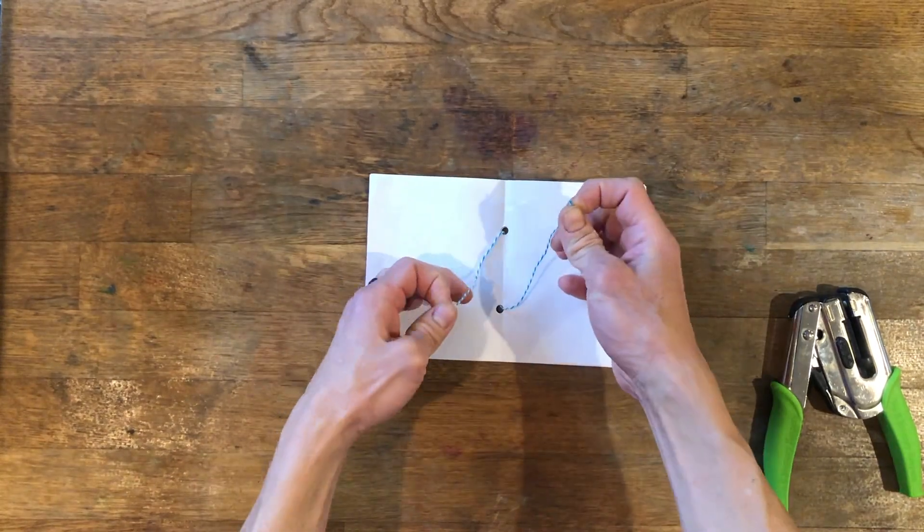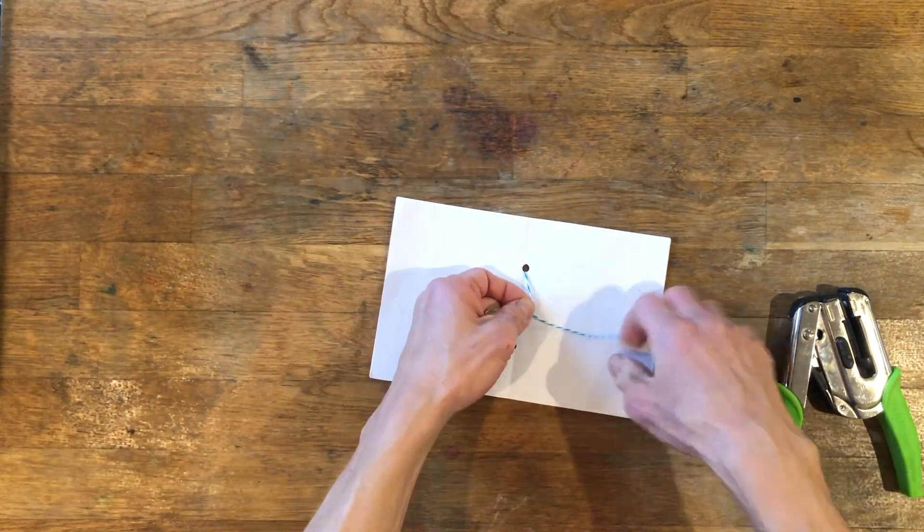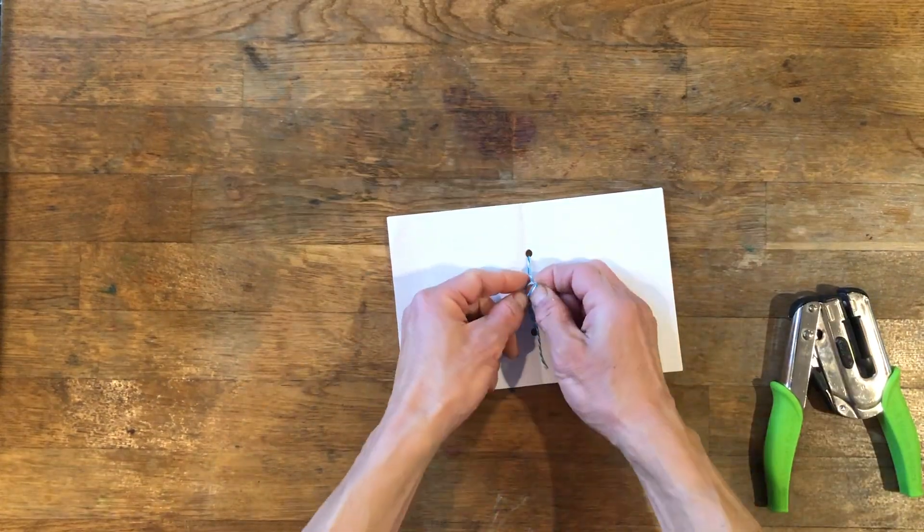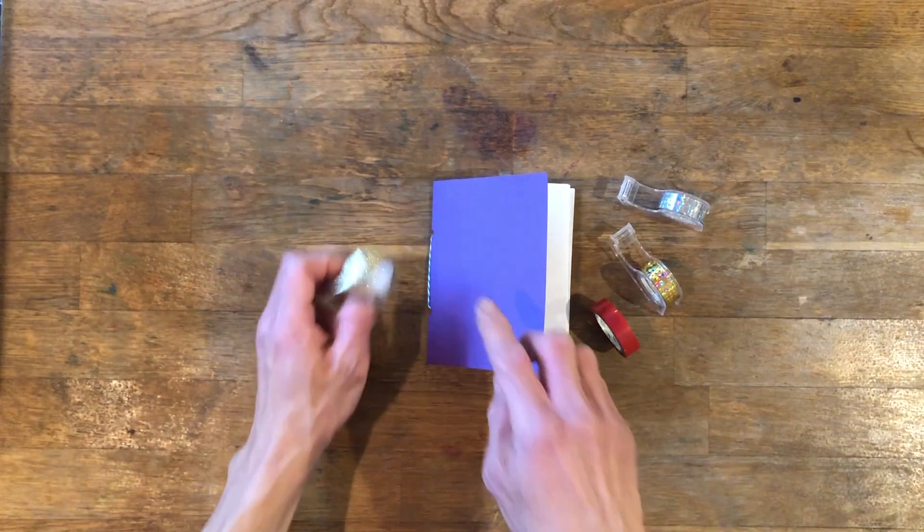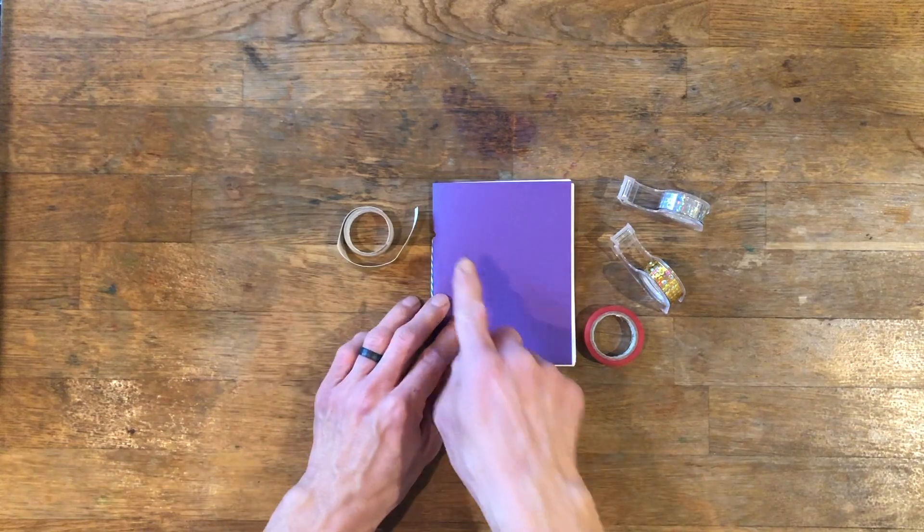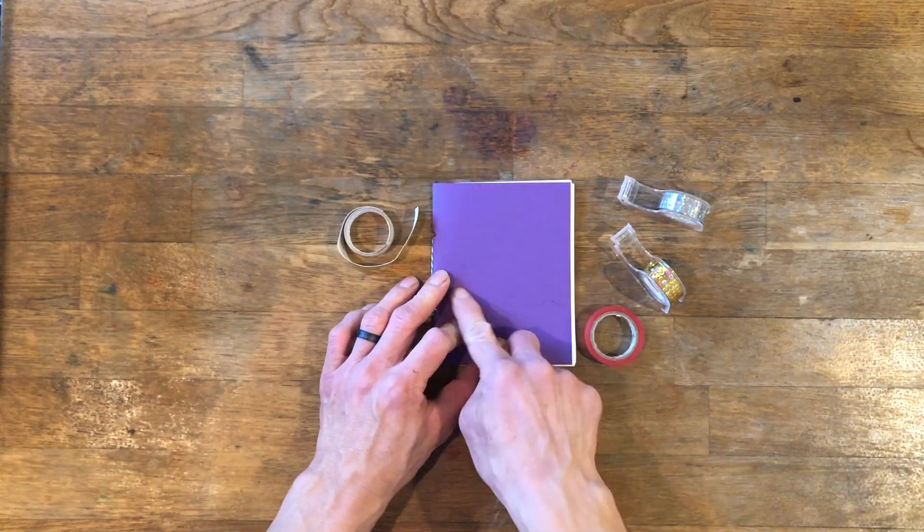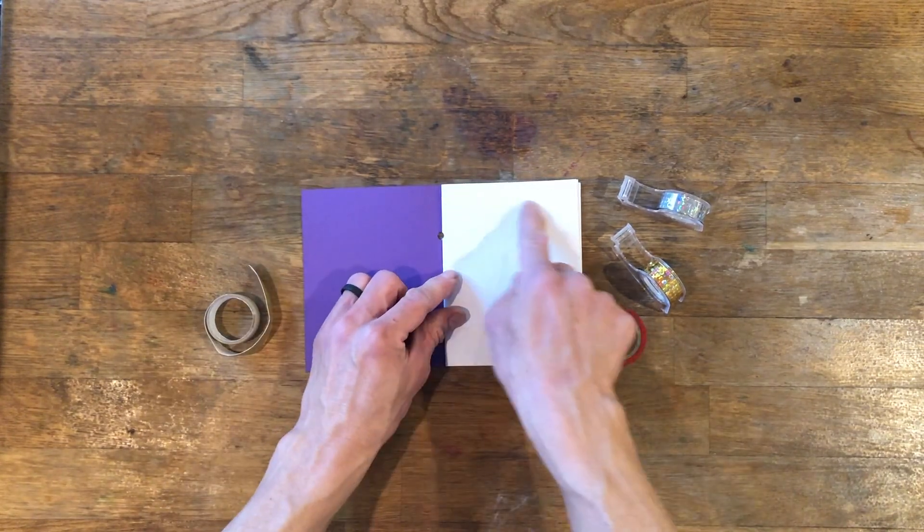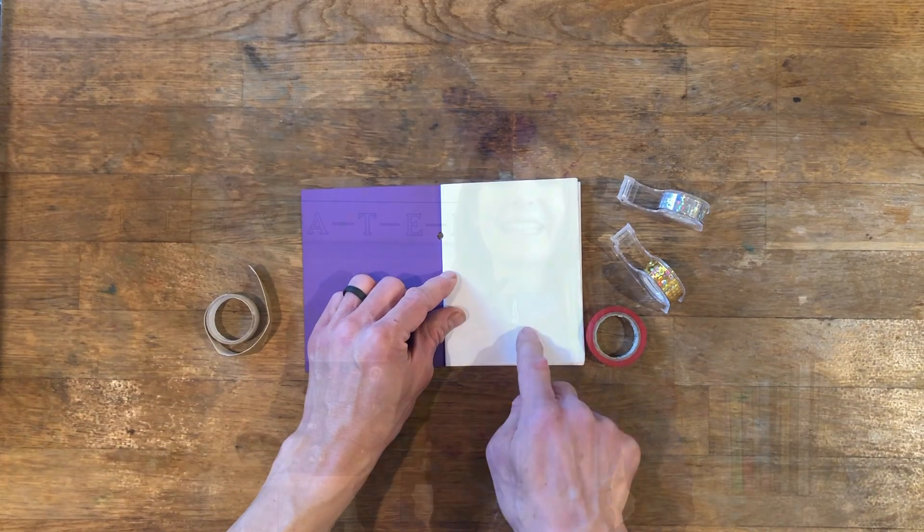You can decorate the cover with decorative tape or even colored electrical tape. Draw with markers and pens and write your spells on the inside pages of your spell book.